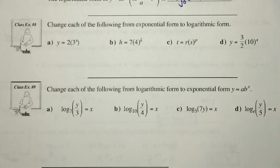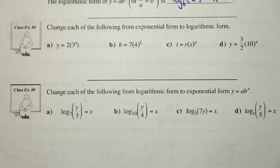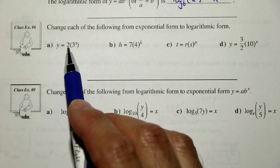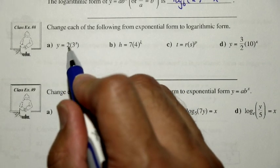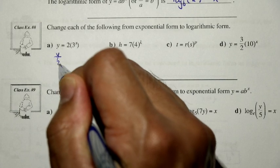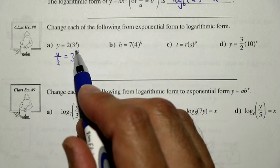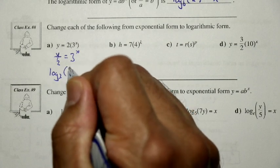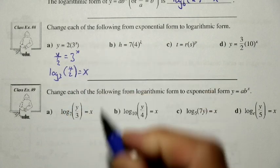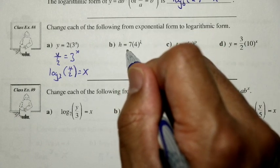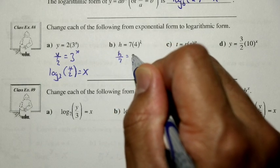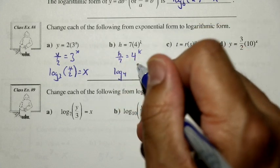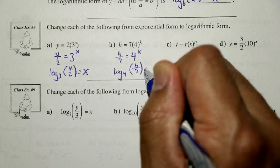Let's use that property for class example 8, changing each of the following from exponential form to logarithmic form. In part a, there is a number multiplying this power, so we divide both sides by 2: y over 2 is equal to 3 to the x. Now this power has nothing multiplied to it, so we change to log form: log base 3 of y over 2 is equal to x. In part b, we divide by 7: h over 7 is equal to 4 to the k, written in log form as log base 4 of h over 7 is equal to k.